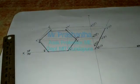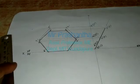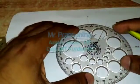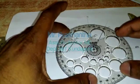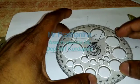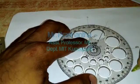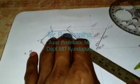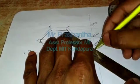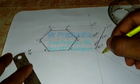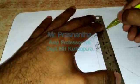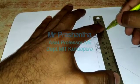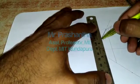This is the front view of the lamina. Next to draw the top view, we need to draw one 45 degree line over here same as you did in lines problem.